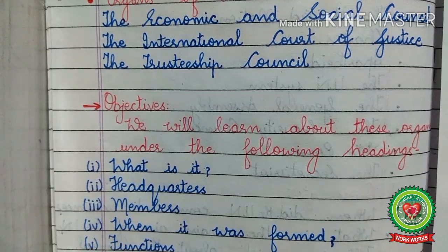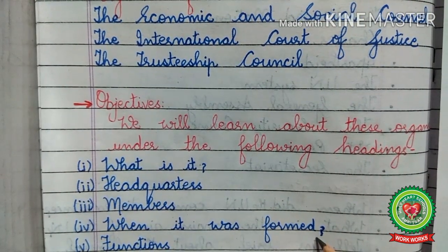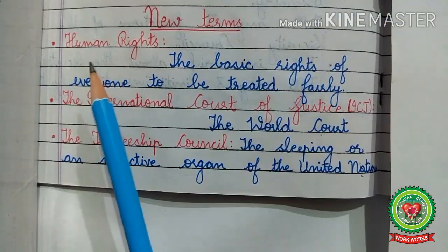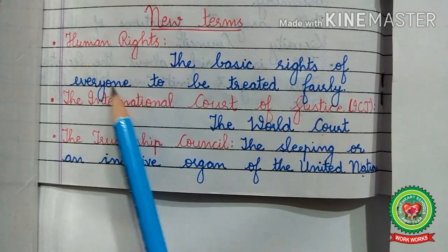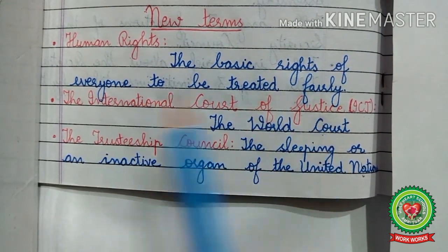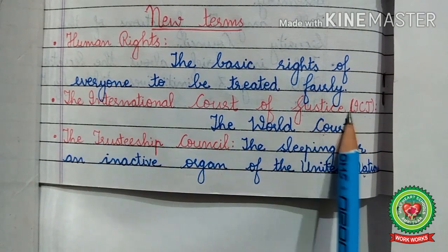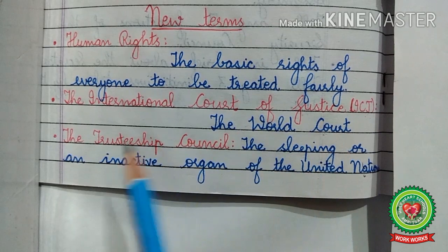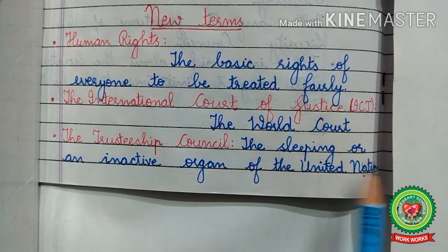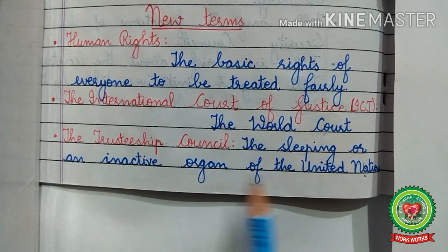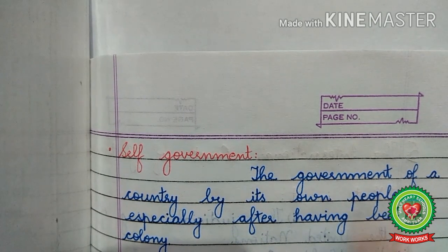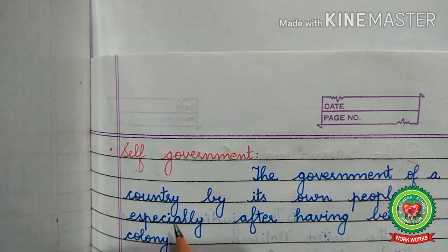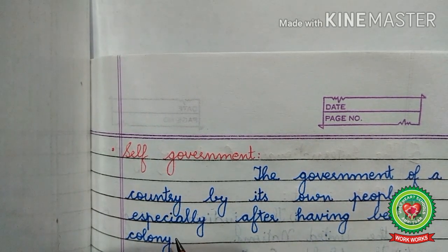Before discussing all these points, let us discuss the new terms related to today's topic. First term: human rights — the basic rights of everyone to be treated fairly. The International Court of Justice, that is ICJ — also called the world court. The Trusteeship Council — the sleeping or inactive organ of the United Nations. Self-government — the government of a country by its own people, especially after having been a colony.